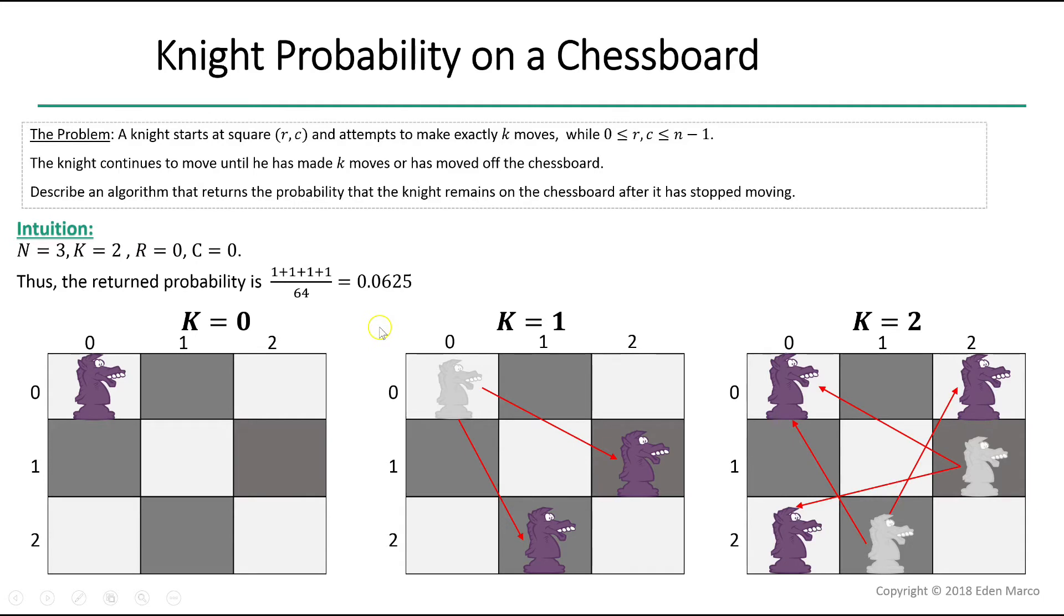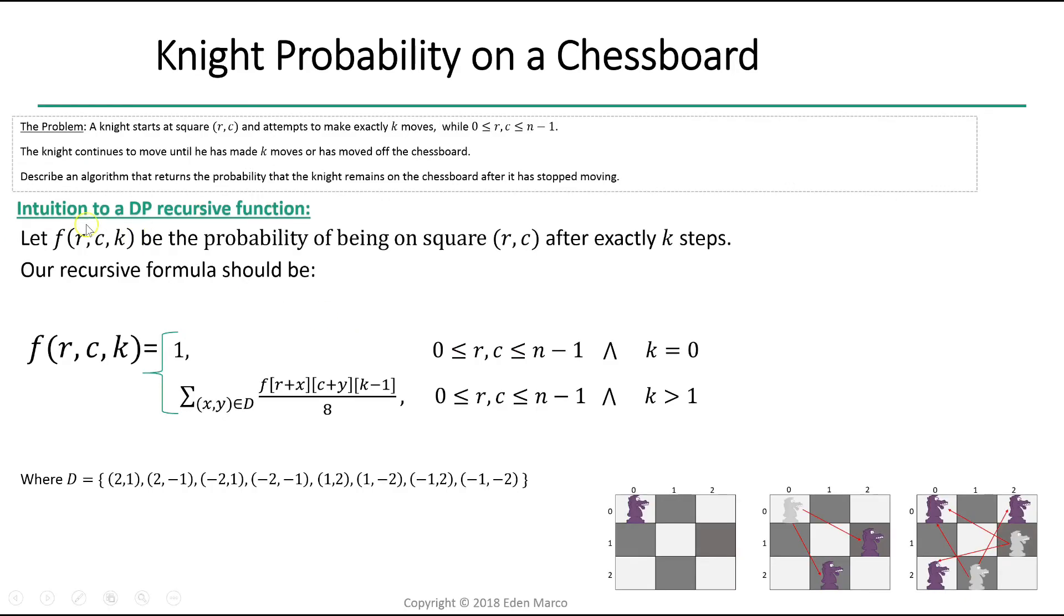Now that we've covered this simple example, we feel that this question is screaming dynamic programming. Let's transform our intuition into a dynamic programming recursive function. Let f of r, c, and k be the probability of being on square r, c after exactly k steps. Our recursive formula should be the following.